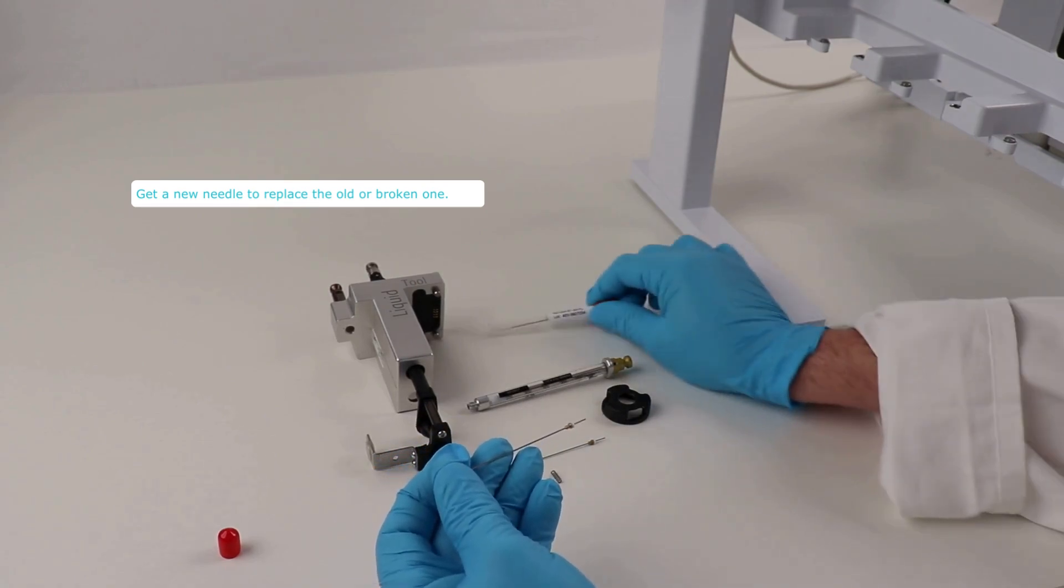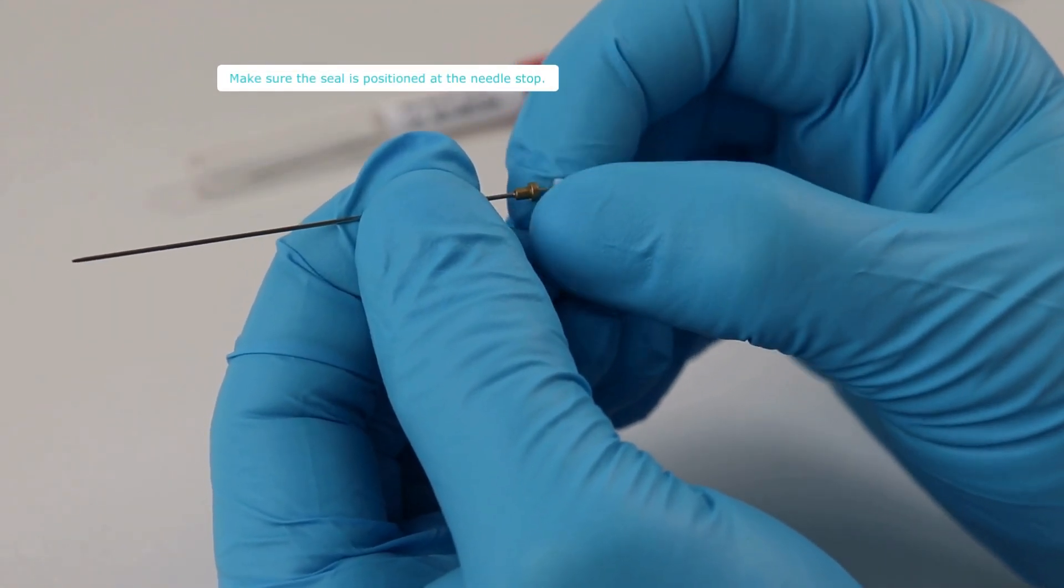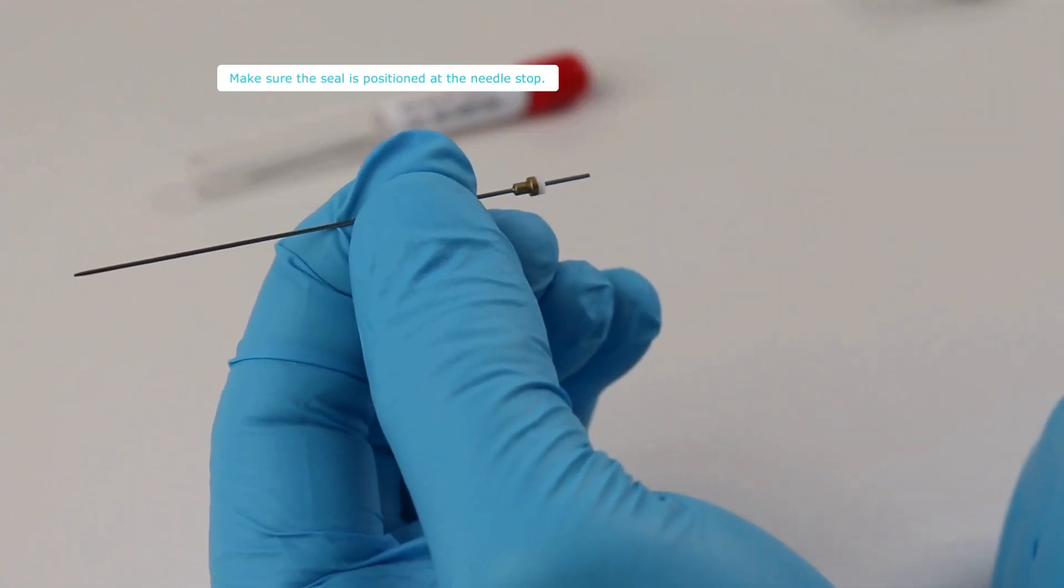Use a new needle to replace the old or broken one. Make sure the needle seal is positioned at the needle stop before connecting it to the syringe.